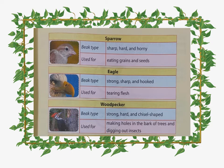First one at the top, the picture of a sparrow is given. The beak type of the sparrow is sharp, hard, and horny. This type of beak is used for eating grains and seeds.